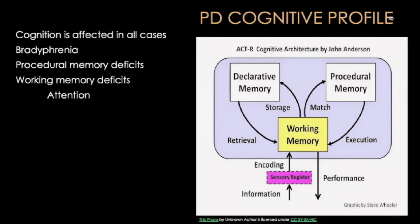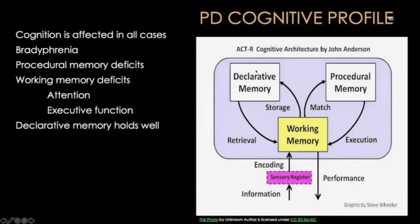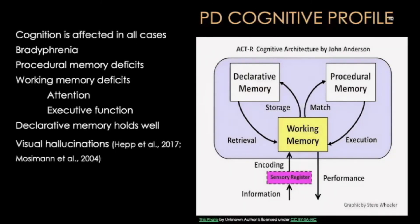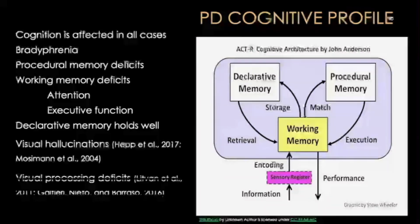Individuals with Parkinson's are less effective in focusing attention, including in divided attention tasks, and executive functions are less effective. Declarative memory — which includes semantic, episodic, and lexical memory — shows a mixed picture: semantic memory and lexical knowledge hold relatively well, while episodic memory is affected in individuals later in the disease. Visual hallucinations are common in individuals with Parkinson's, as are visual processing deficits.